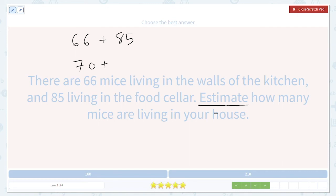85. Remember, five always rounds up to 90. So 70 plus 90 is a total of 160 mice.